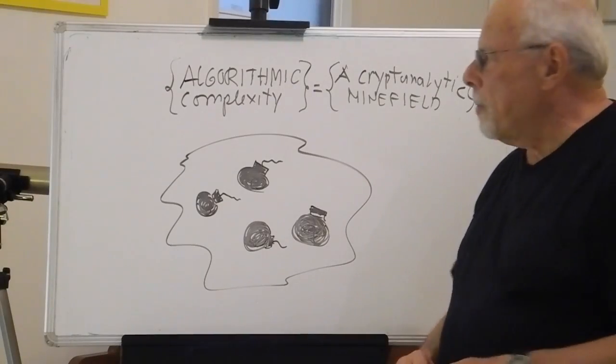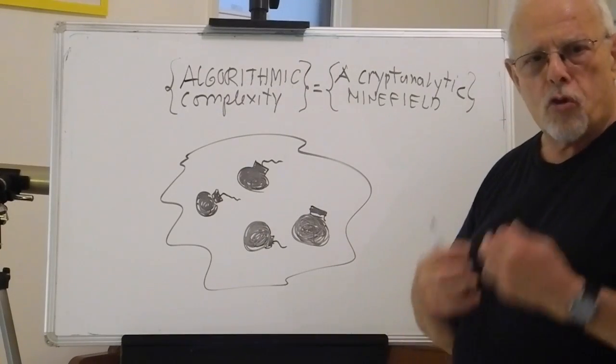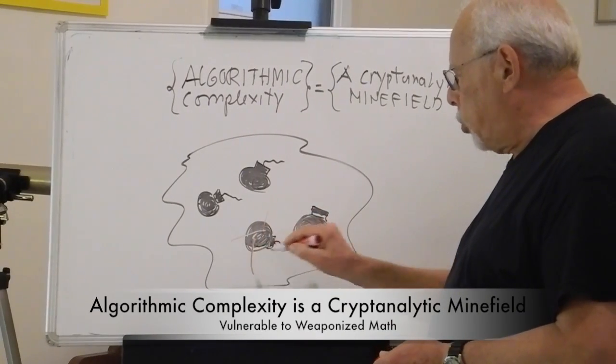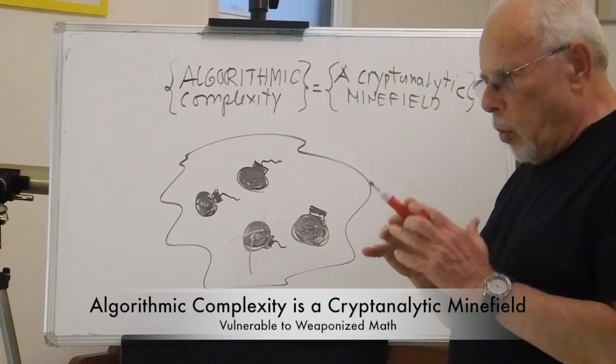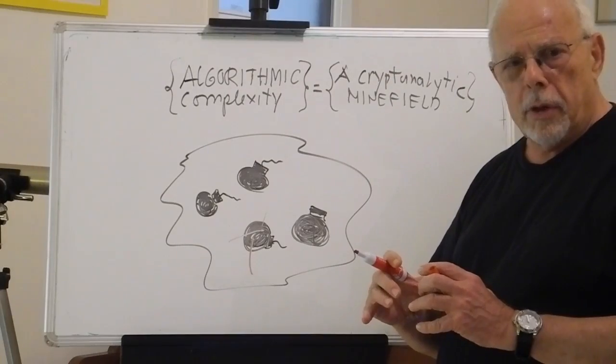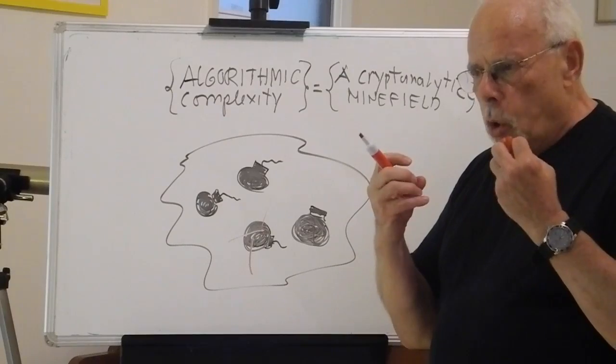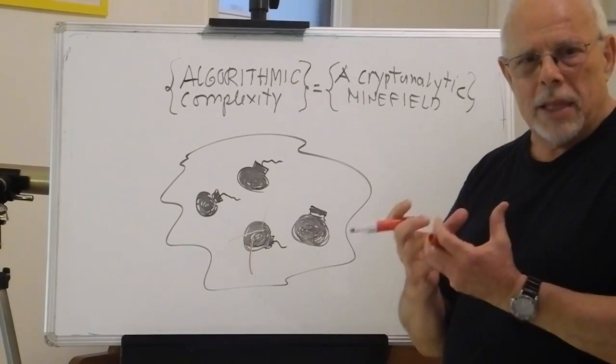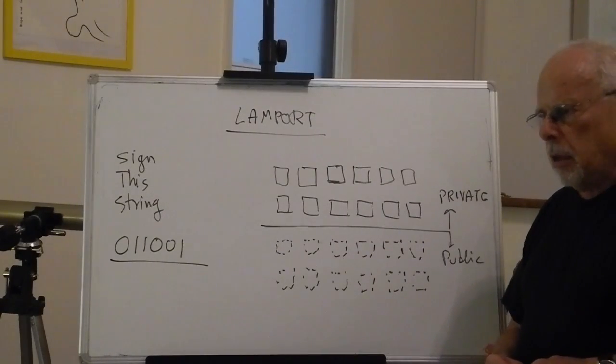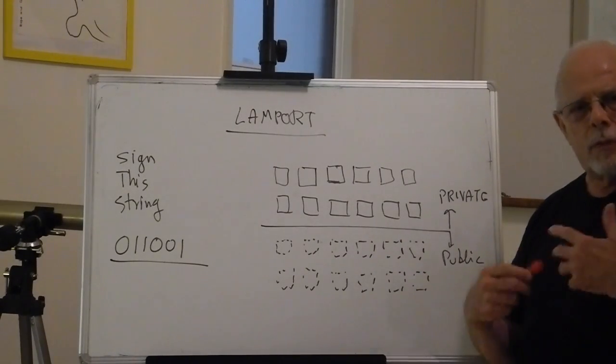The problem is that algorithmic complexity is essentially a cryptanalytic minefield full of potential ways in which somebody smart enough, dedicated enough, can find vulnerabilities that we, the designers of those complexities, don't see. Algorithmic complexity flourished in the last decades of the former century.